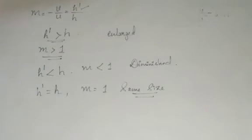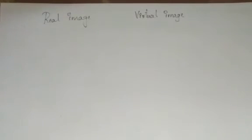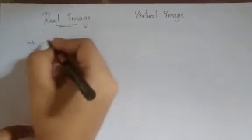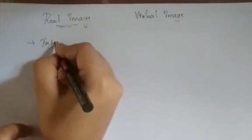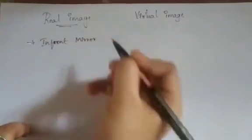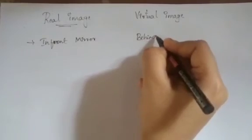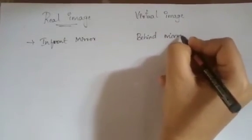Let us summarize what we have discussed. There are two groups: real image and virtual image. This applies to both concave and convex mirrors, but a convex mirror forms only virtual images, while a concave mirror forms both real and virtual images. A real image forms in front of the mirror; a virtual image forms behind the mirror.